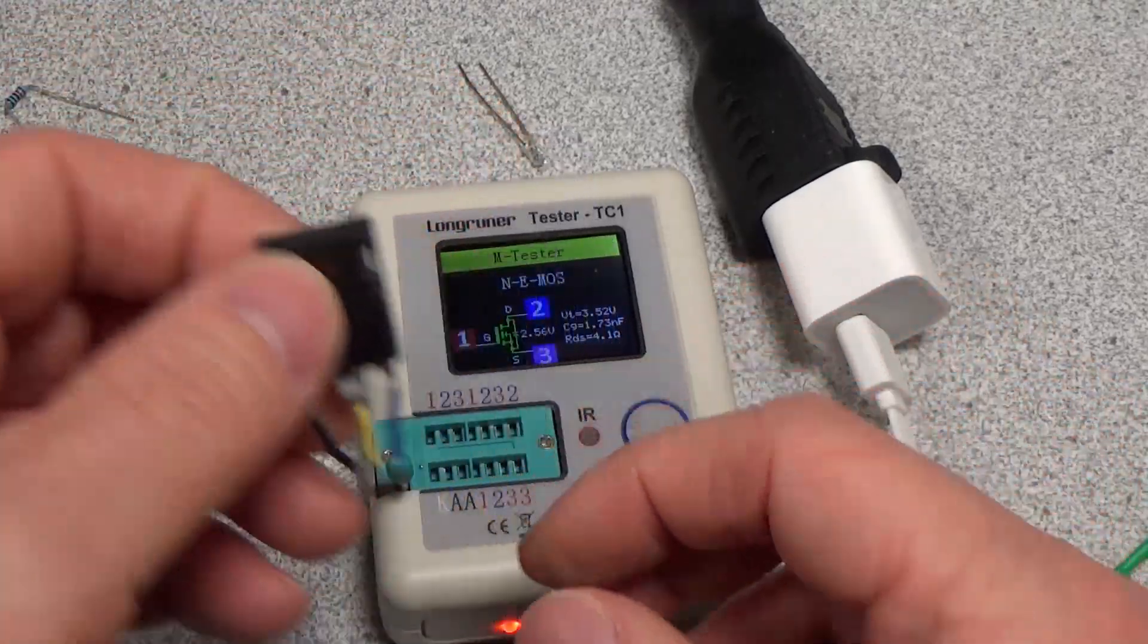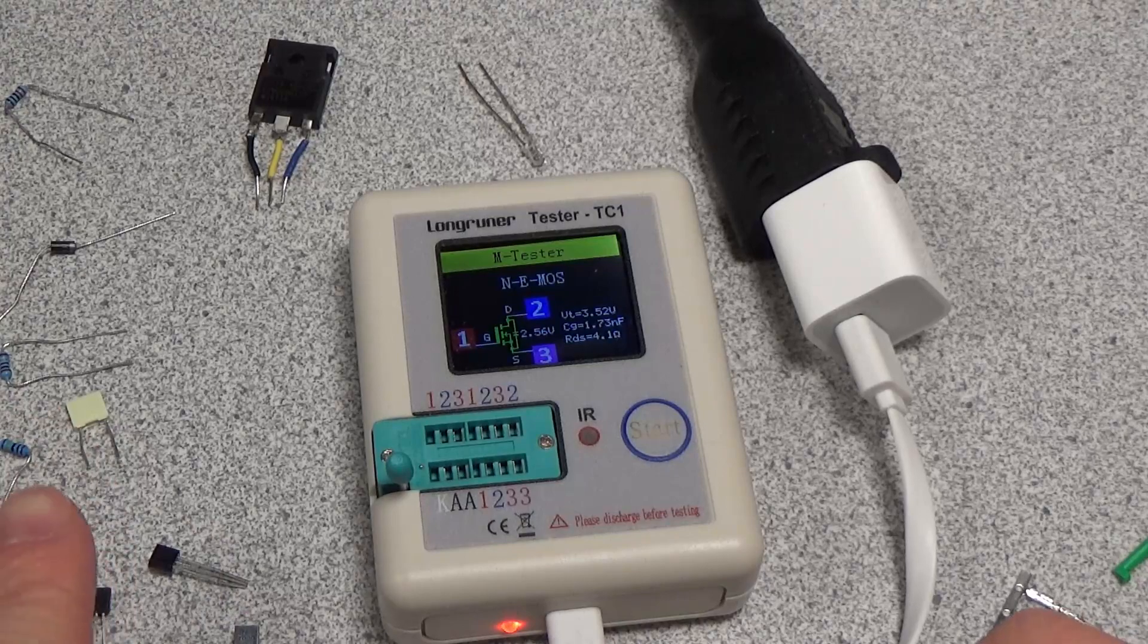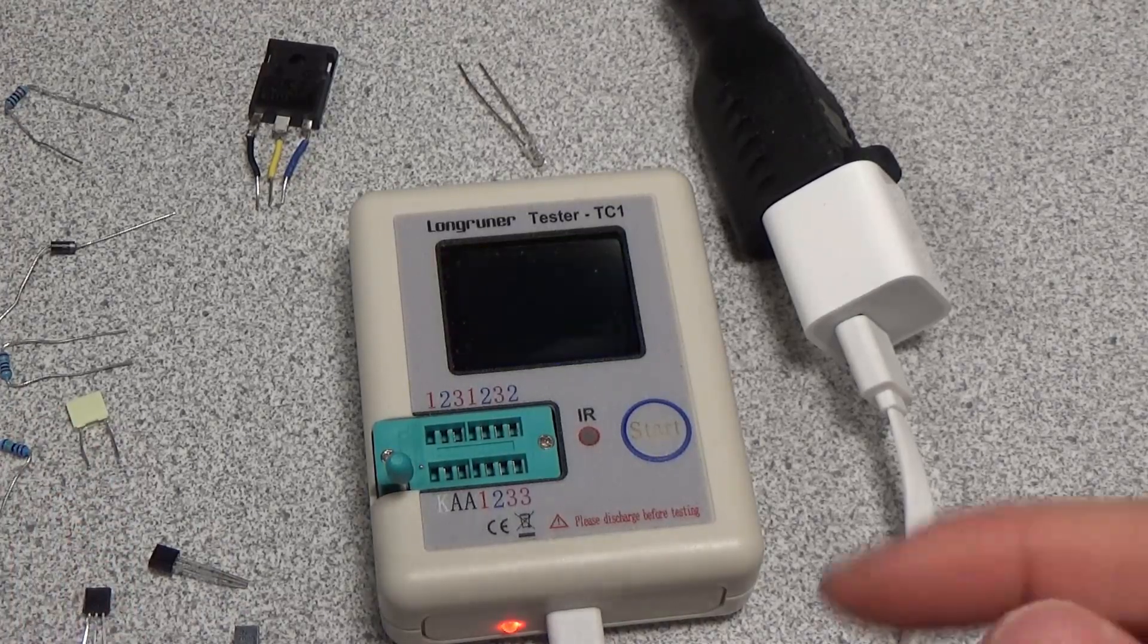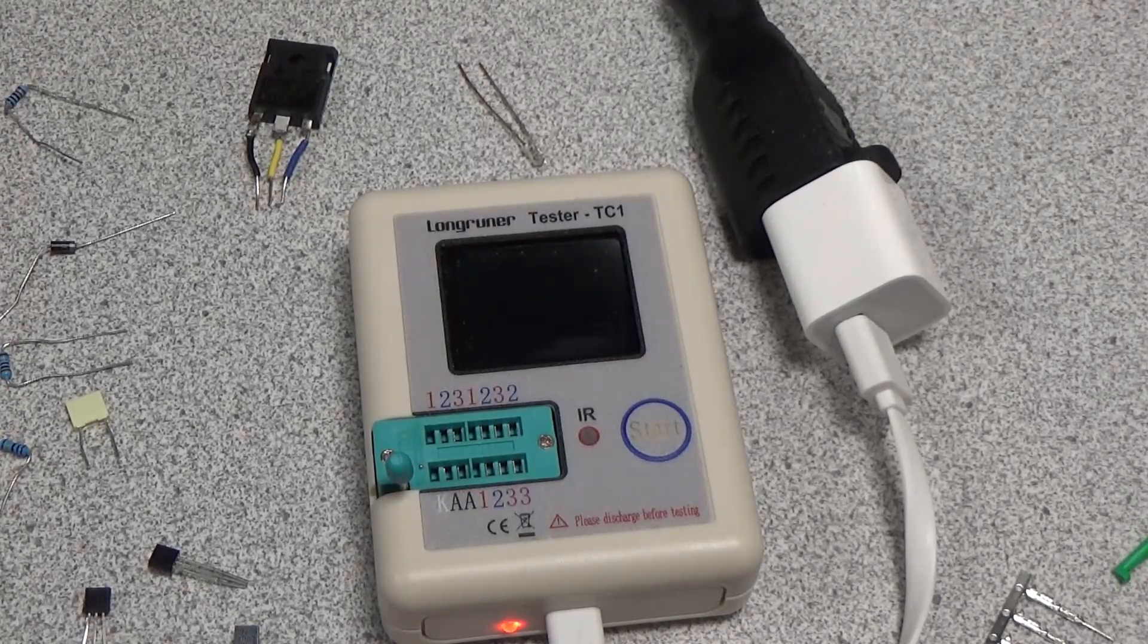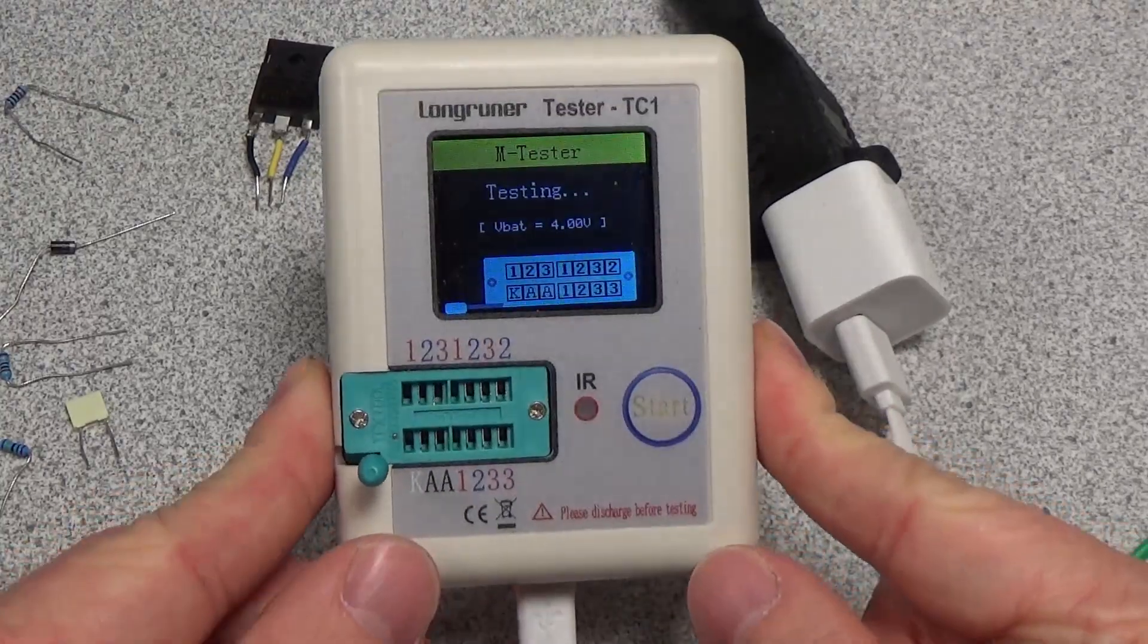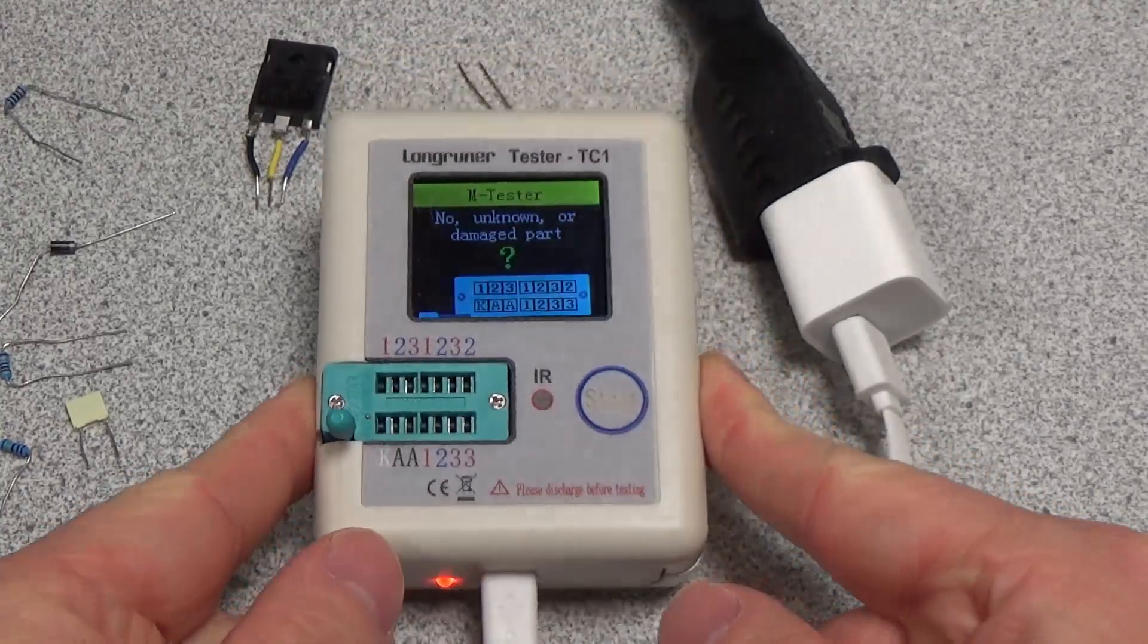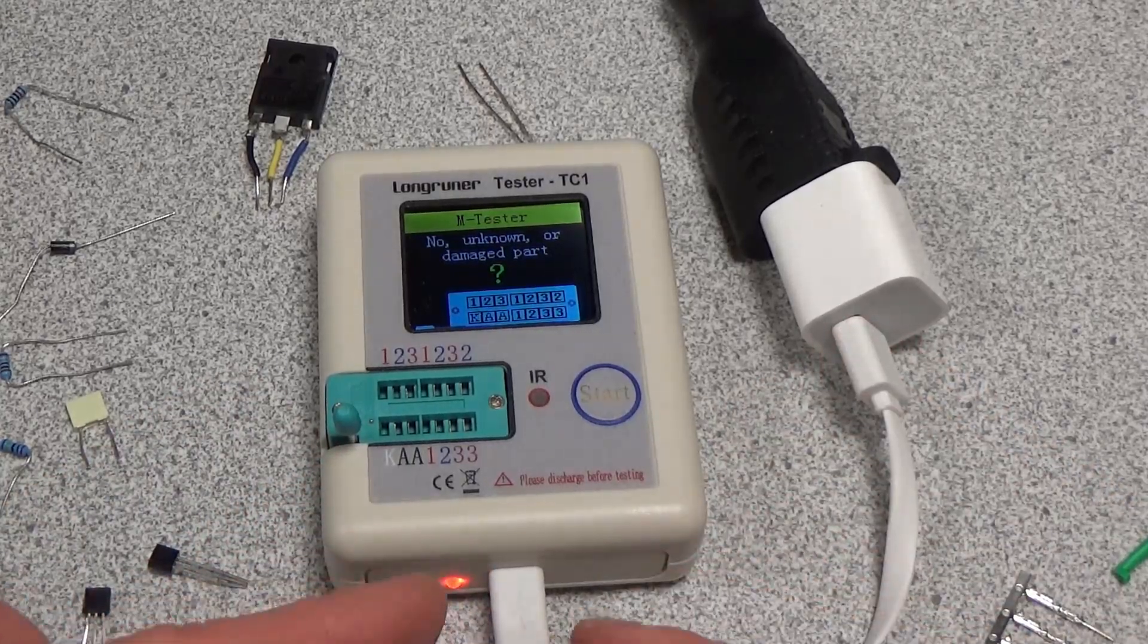So none of these components stumped it except for the depletion mode MOSFET or P-channel JFET. It seems to be a little confused on which component's which with that test. You can see the battery life's maybe not that great and you can see that it keeps shutting off fairly quickly because it's running out of battery while we're trying to do the tests.